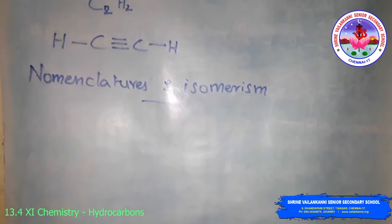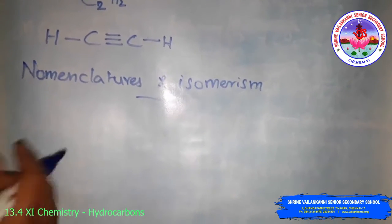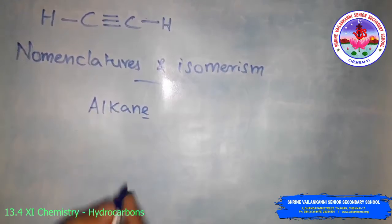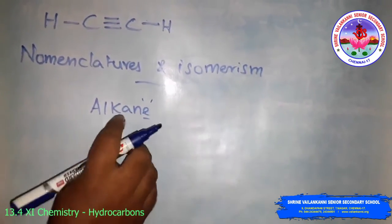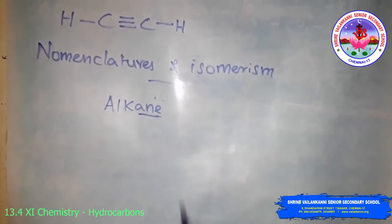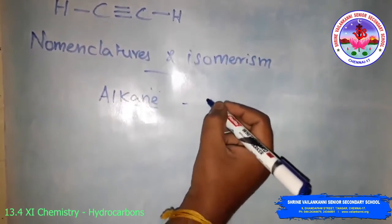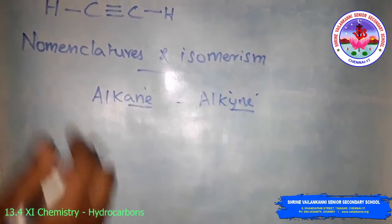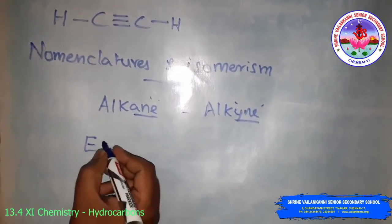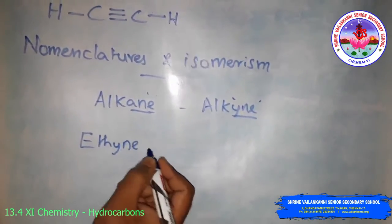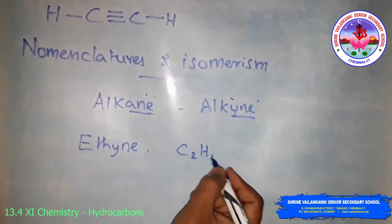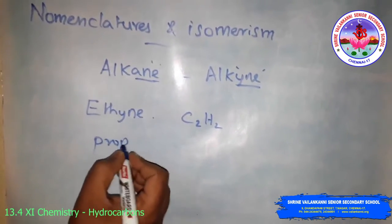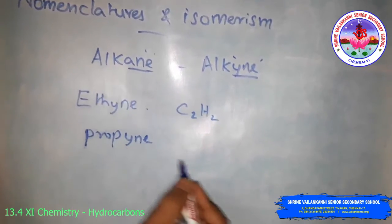For nomenclature, alkynes end with the suffix '-yne'. For example, alkane compounds end with '-ane'. By removal of '-ane' and addition of '-yne', you get the alkyne name. For example, ethyne has the molecular formula C2H2. Then propyne, butyne, and so on.